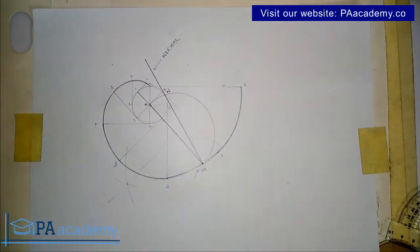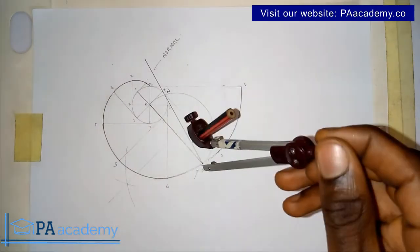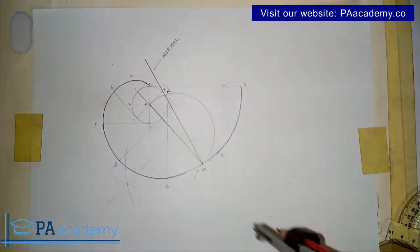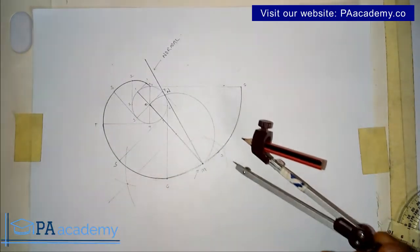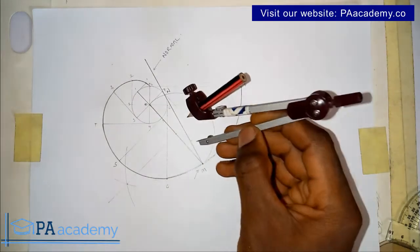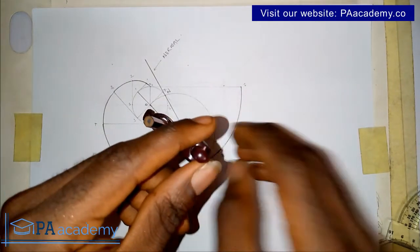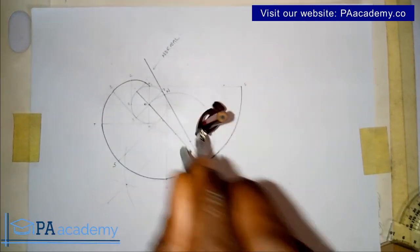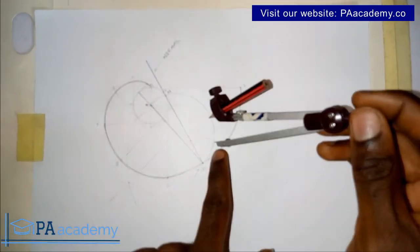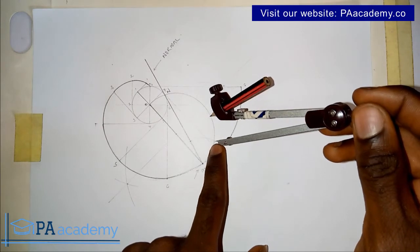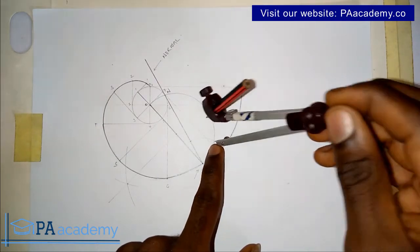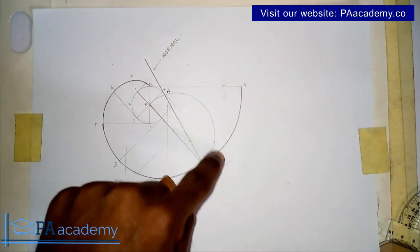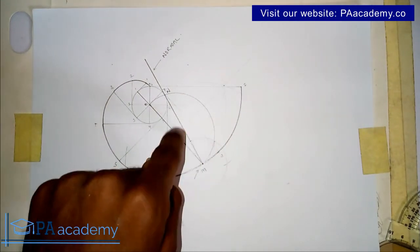You'll have something like this — it should be a faint construction line. With the same compass length, place it where the arc is touching the normal and bisect the arc. Then place the compass on the other point where the arc touches and bisect it again, giving you two intersection points.